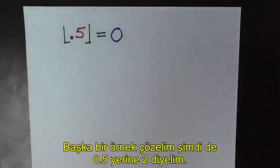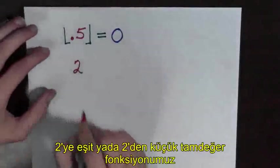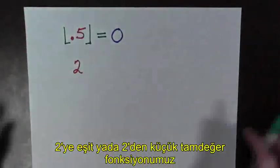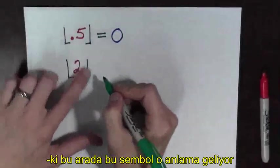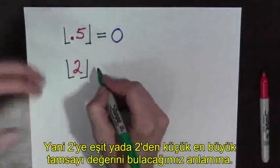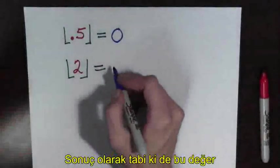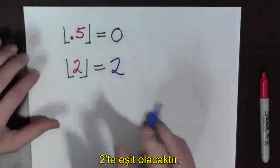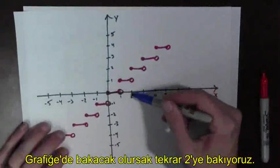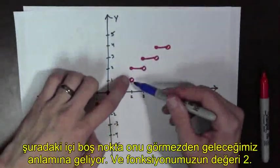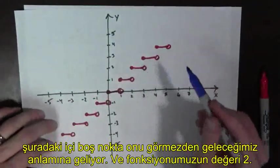Let's do another example. So now, instead of 0.5, let's look at 2. What's the greatest integer that's less than or equal to 2? So that's what this symbol means. Well, the greatest integer that's less than or equal to 2 is clearly 2. And if we look at our graph again, go over to 2. This hole means that we ignore it, and we see that our function's value is, in fact, 2.